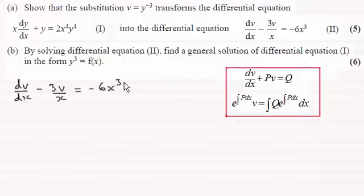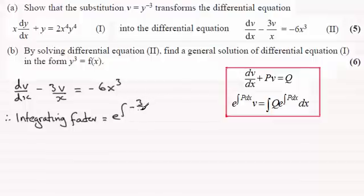So what we've got then is to work out what that integrating factor is. So therefore the integrating factor, remember, was e to the integral p dx. So the integrating factor will be equal to e to the integral and p is the minus 3 over x, so that's minus 3 over x integrated with respect to x.